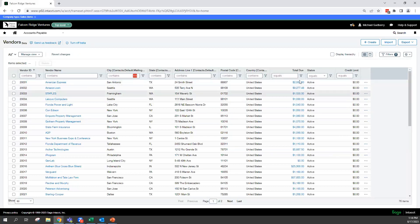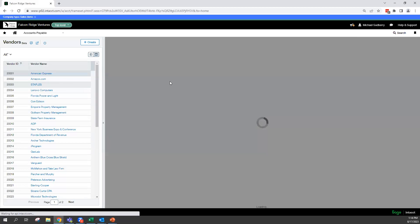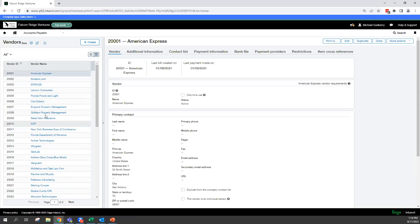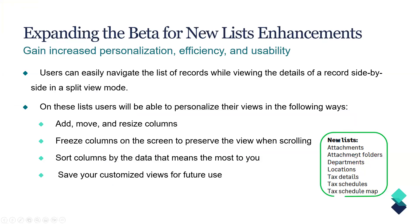Of course, we still retain hyperlinks — so if you click on total due for a vendor, it gives you a pop-up showing the total due. If you want to see vendor information, you get a really neat side-by-side view with the beta list: your vendor list on one side and the actual vendor record on the other. These list tools will be available for all new objects within Intacct, including attachments, attachment folders, departments, locations, and the different tax lists. You can also freeze columns for easier viewing. If you're a fan of custom views in your list, this is really exciting — a better way to look at these.